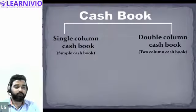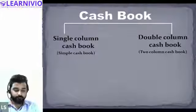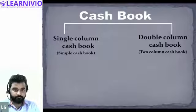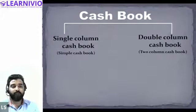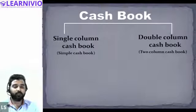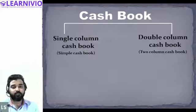Halima, can you tell me in the single column cash book what kind of transactions are recorded? Only cash transactions are recorded in the single column cash book, and in the double column cash book both cash and bank transactions are recorded. Correct.